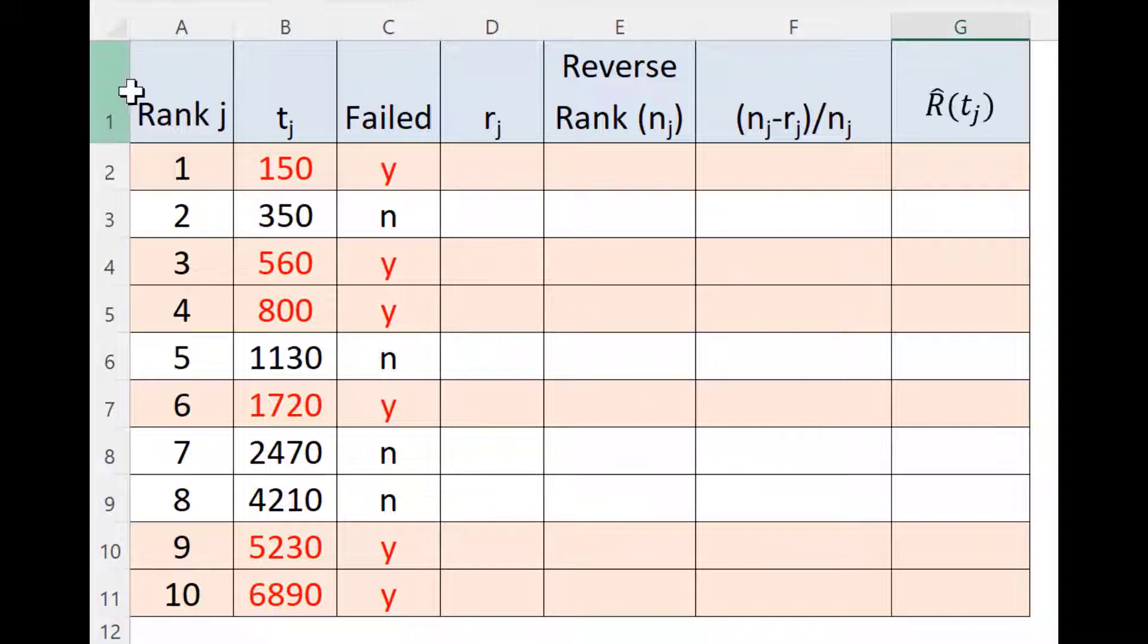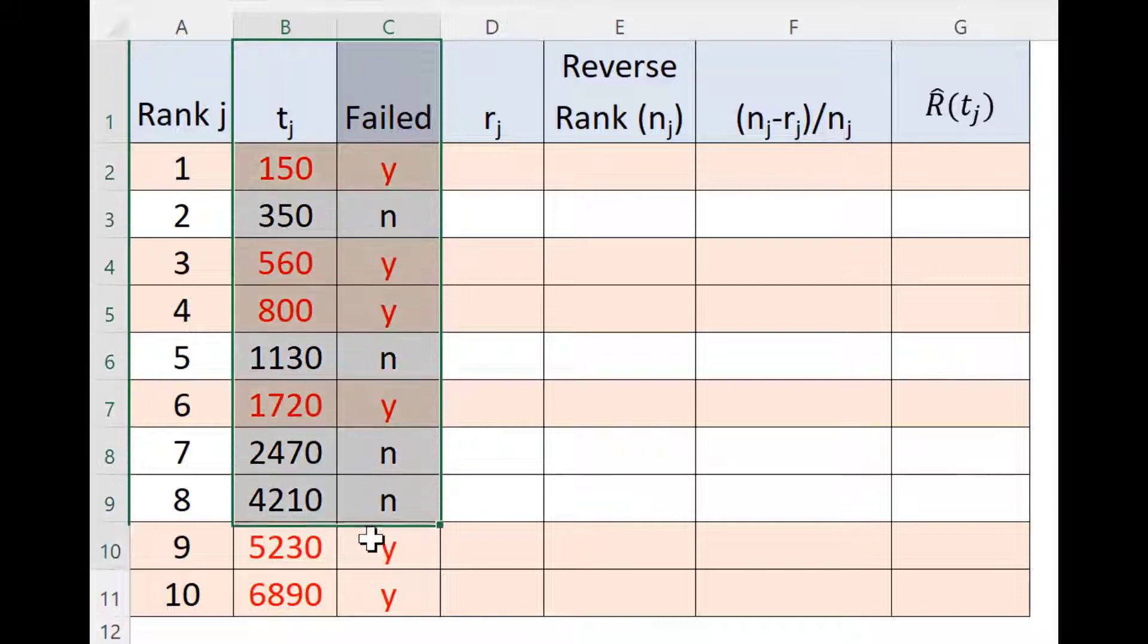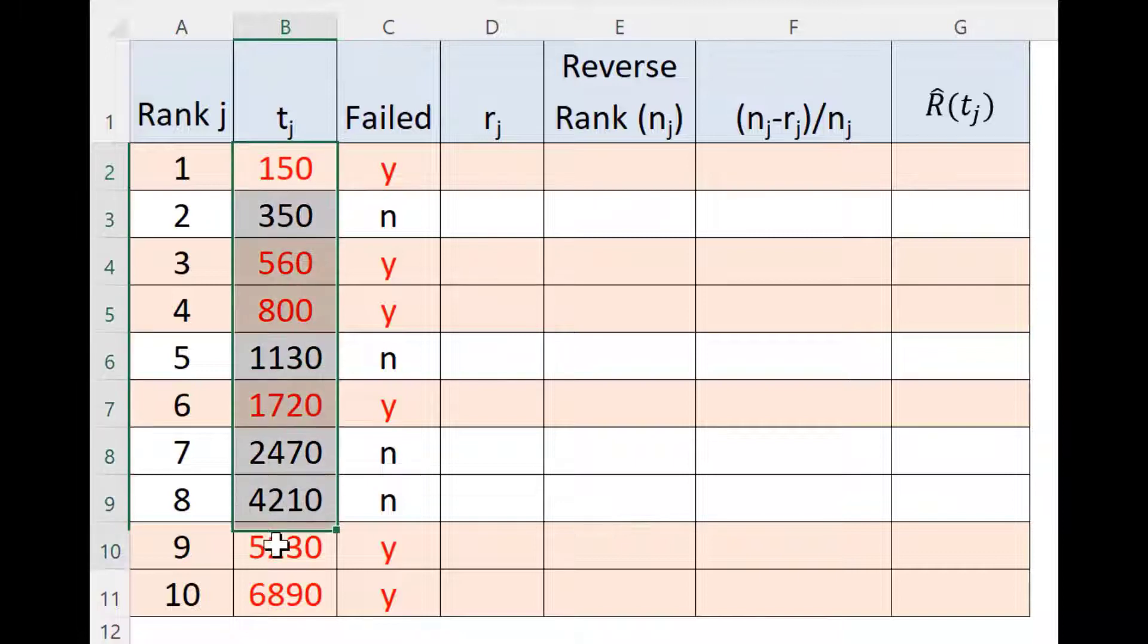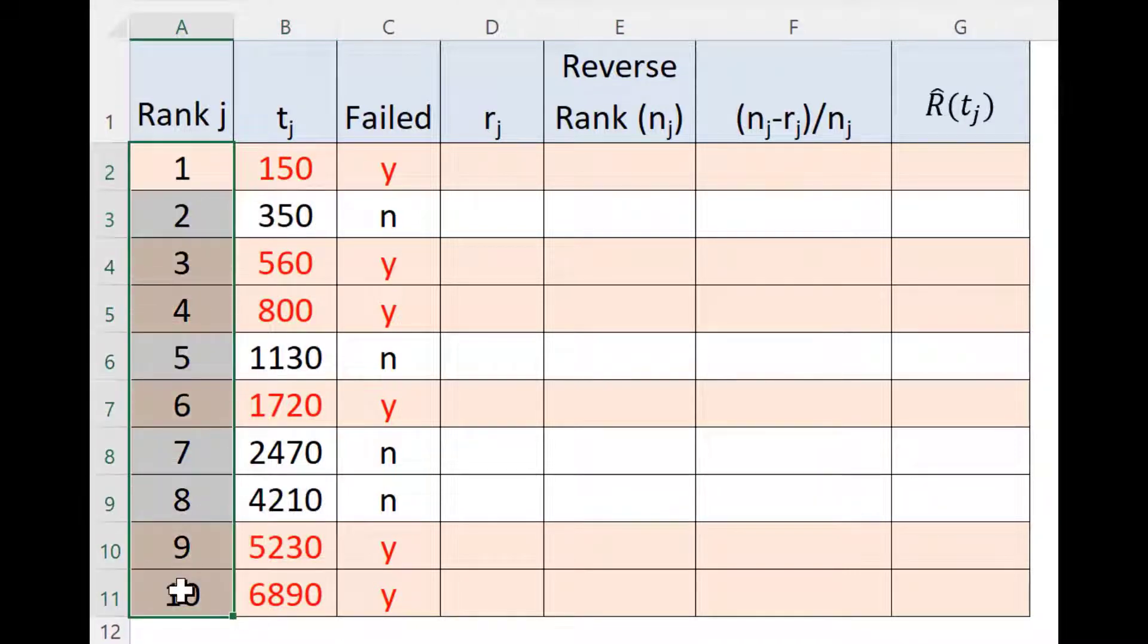This table shows data of 10 components of which some of these components have failed. For example, the first component has failed at 150, the second one didn't fail at 350, etc. Data is arranged in ascending order in the column tj where t is the time for jth component and j is the rank tabulated in this column rank j.